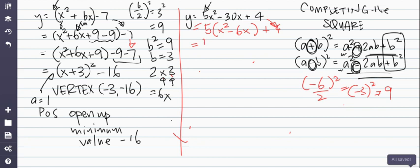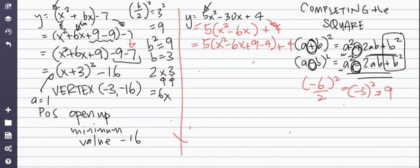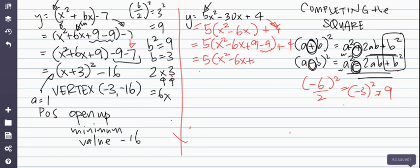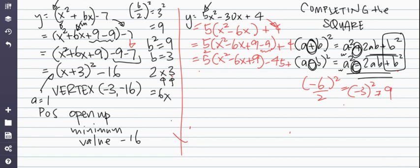So -6 divided by 2 squared is (-3)² = positive 9, because negative 3 times negative 3 is positive 9. I'm going to add and subtract 9 inside the brackets — this is like adding and subtracting 0. So I have 5(x² - 6x + 9 - 9) + 4. Now I want to kick out the negative 9; to do that I need to multiply it by the 5. So 5 times -9 is -45, giving us 5(x² - 6x + 9) - 45 + 4.